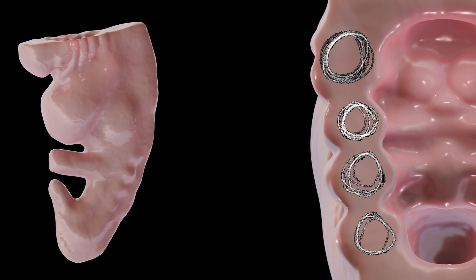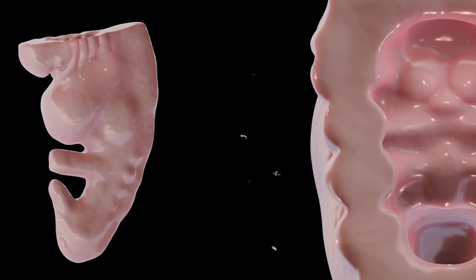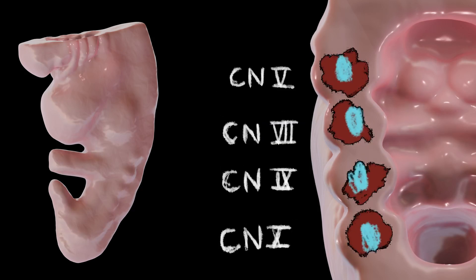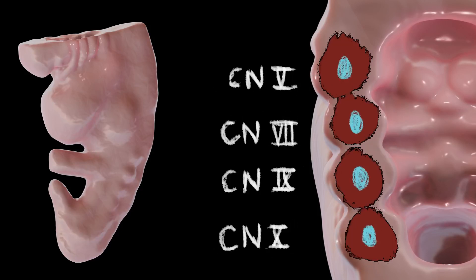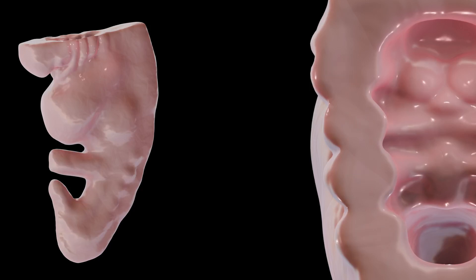So here's a quick recap. Each arch has a mesenchymal core made of mesoderm and neural crest cells. This core includes a central cartilaginous skeletal element derived from the neural crest cells, striated muscle precursors that come from the mesoderm, and an aortic arch artery. But it's not just about the arches. The grooves, also known as clefts, arches, and pouches all play unique and vital roles in shaping the head and neck.